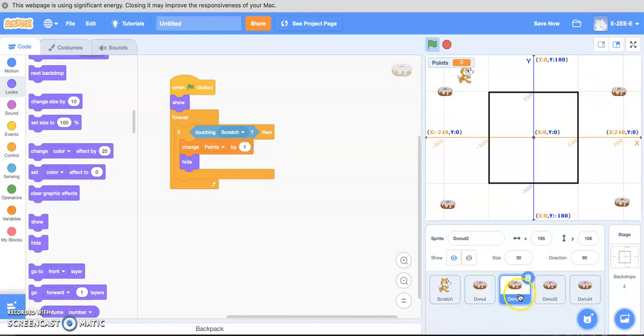We've got four donuts. Donut, donut two, donut three, donut four. Reset this game.